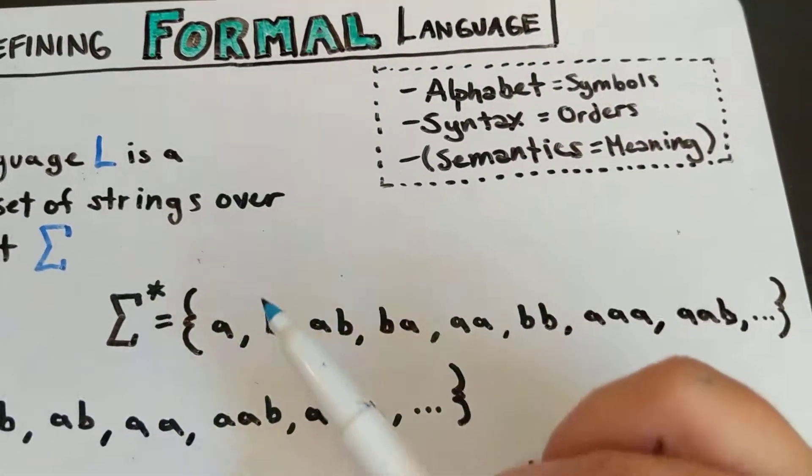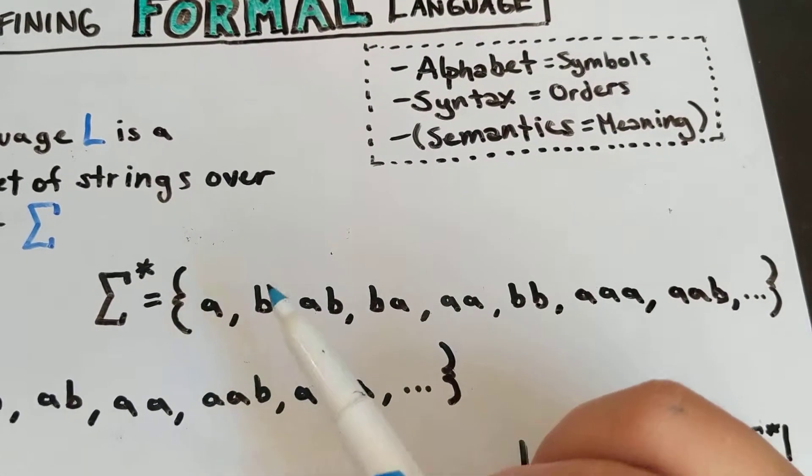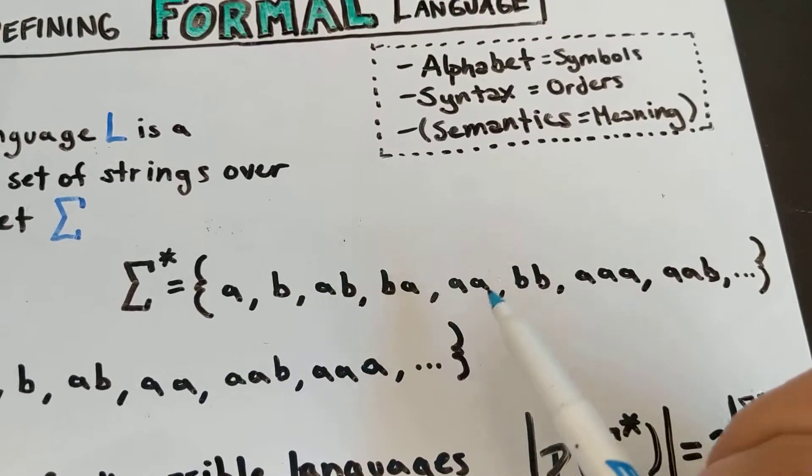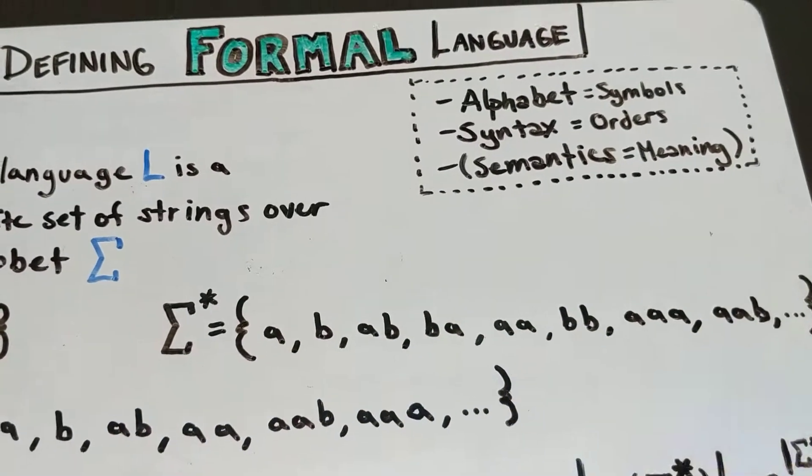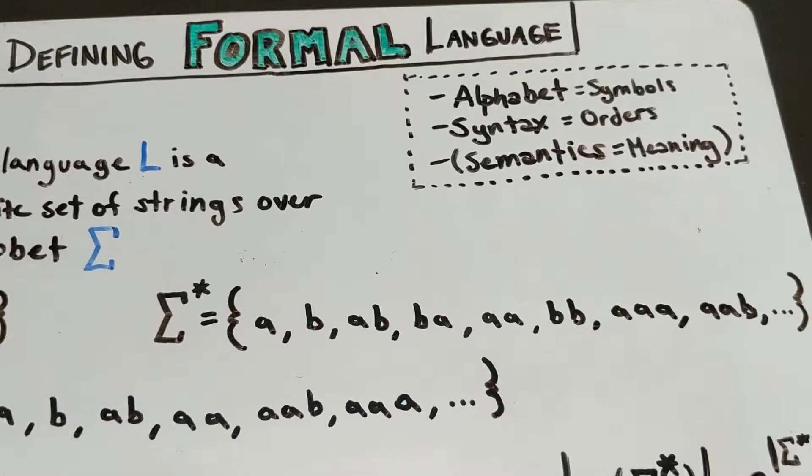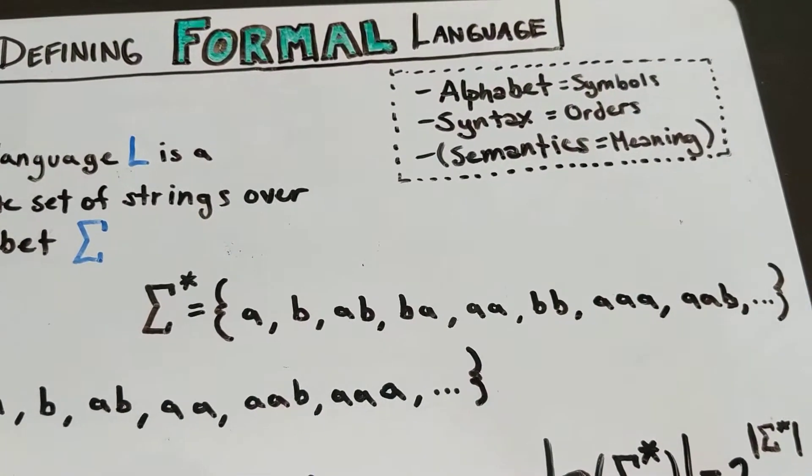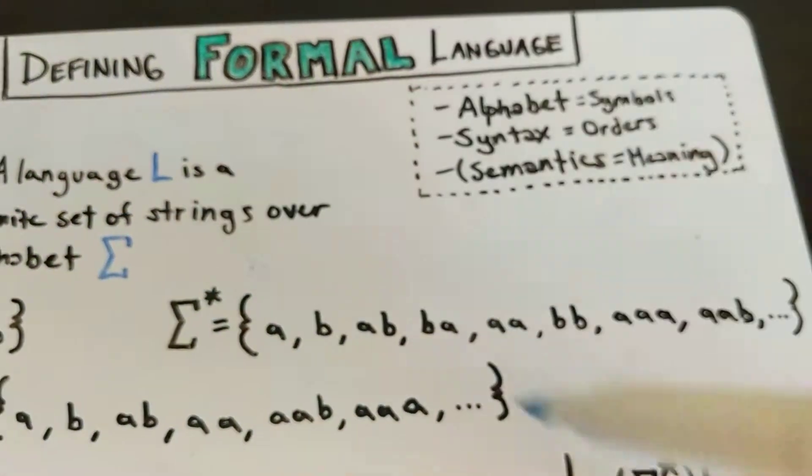So for example, this alphabet {A, B} would be A, B, AB, BA, AA, AAB, BAA, AAA, AB, and so on and so forth, until you've created every possible sequence of A's and B's. And this would be your sigma star.